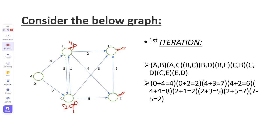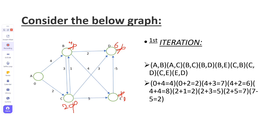Next, B has directions to C, D, and E. We check B to C: distance is 3, B is 4, so 4 plus 3 equals 7. Since 7 is greater than 2, no update needed. We check B to D: distance is 2, B is 4, so 4 plus 2 equals 6. Since 6 is less than infinity, we update D to 6. We check B to E: distance is 4, B is 4, so 4 plus 4 equals 8. Since 8 is less than infinity, we update E to 8.